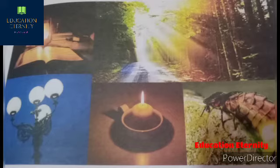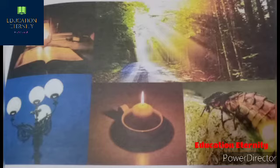As rays appear to meet at the focus behind the mirror, the image formed in a convex mirror is usually virtual. Uses of spherical mirrors: concave mirrors are used to converge sunlight at a point, making it very hot; concave mirrors are also used in headlights of cars and torches. Convex mirrors are used in telescopes, as rear-view mirrors in cars, and as security mirrors to cover a large area.